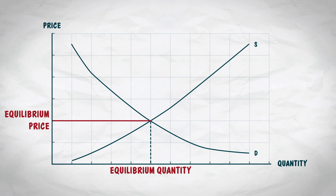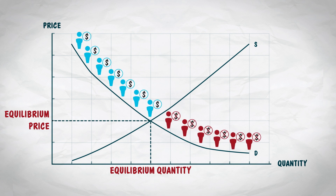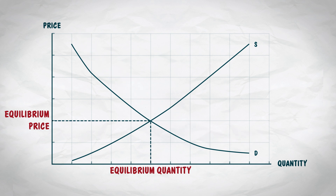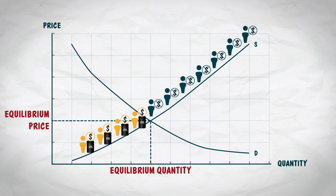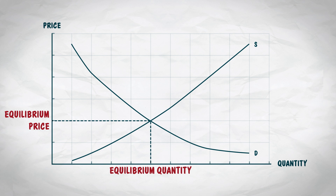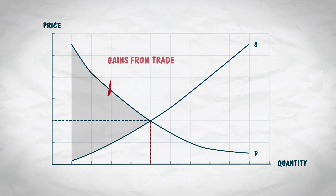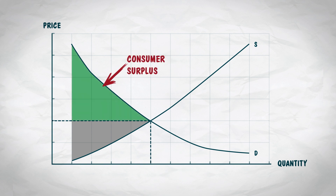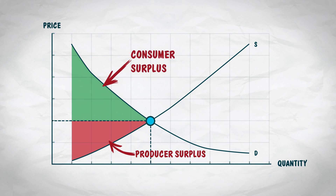One final thing. Notice that the equilibrium price splits the demand curve into two parts: the buyers and the non-buyers. And the oil is bought by the buyers who value it the most. In the same way, the supply curve is split into sellers and non-sellers, and the oil is sold by the sellers with the lowest costs. What this means is that at the equilibrium quantity, the gains from trade are maximized — and the gains from trade are the sum of the consumer surplus and the producer surplus. So the equilibrium maximizes the sum of consumer surplus and producer surplus.